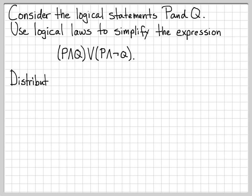The first thing that comes to mind is to use the distributive law. I have a 'P and' here and a 'P and' here, so that is somewhat of a clue that I could factor out a P from both of these terms — that's basically just an application of the distributive law.